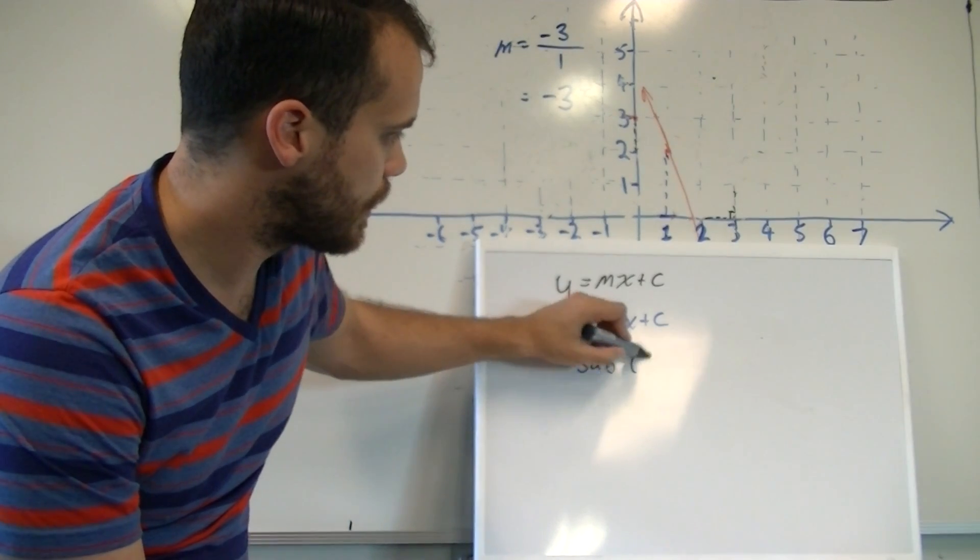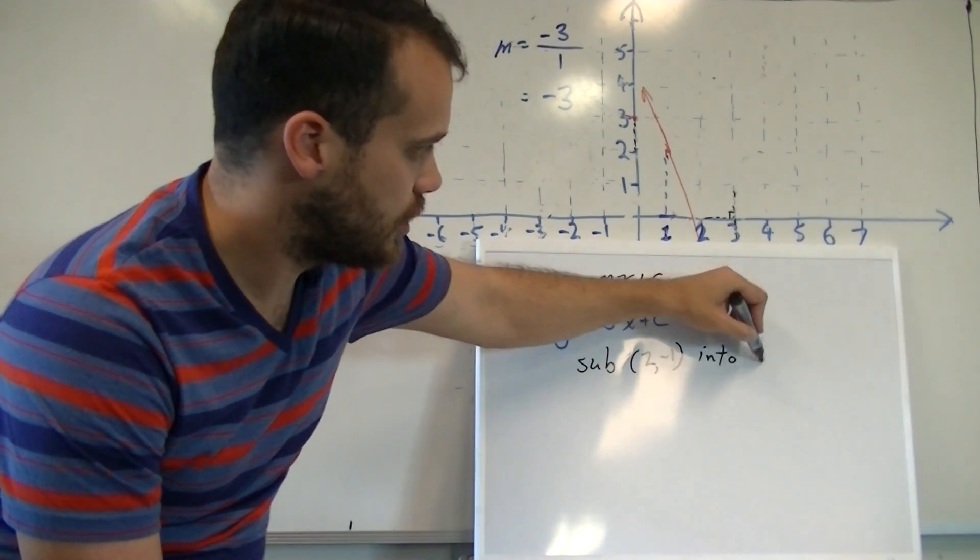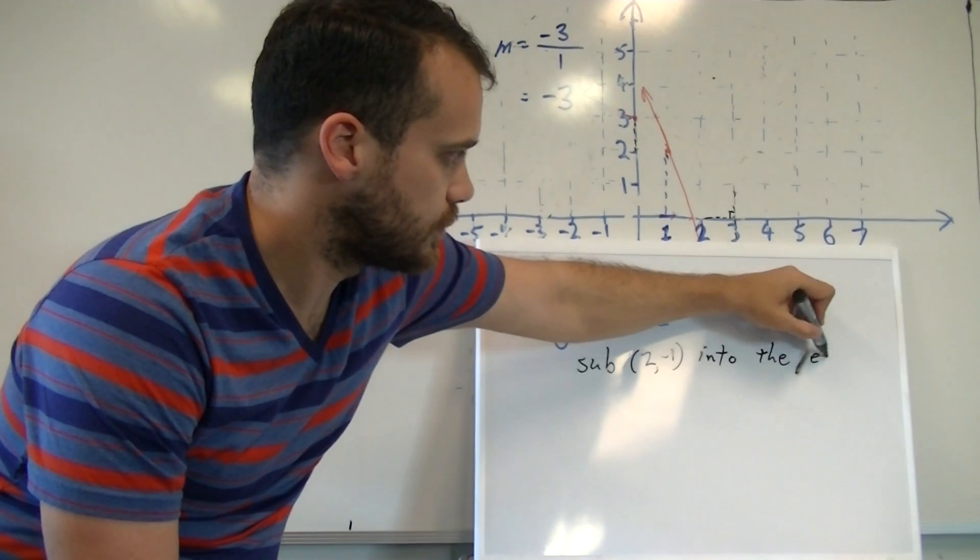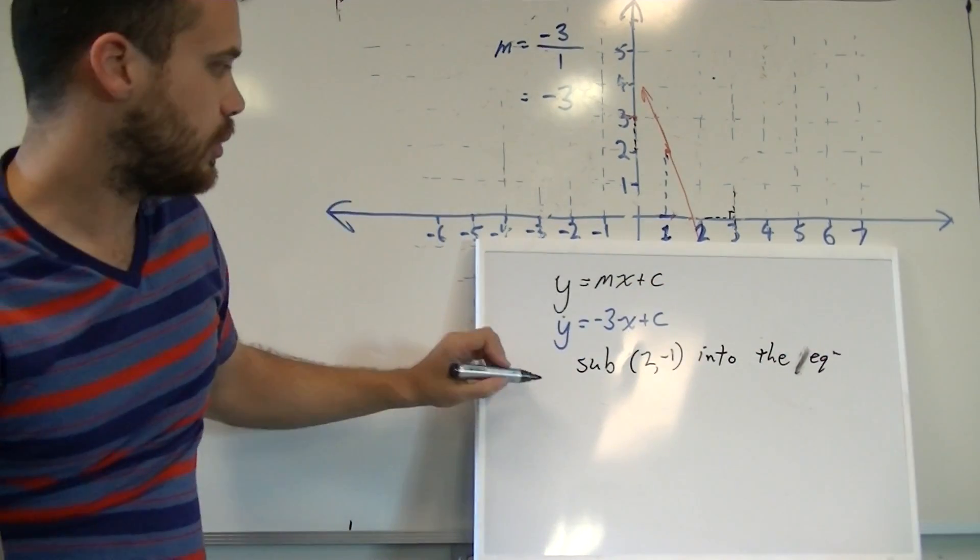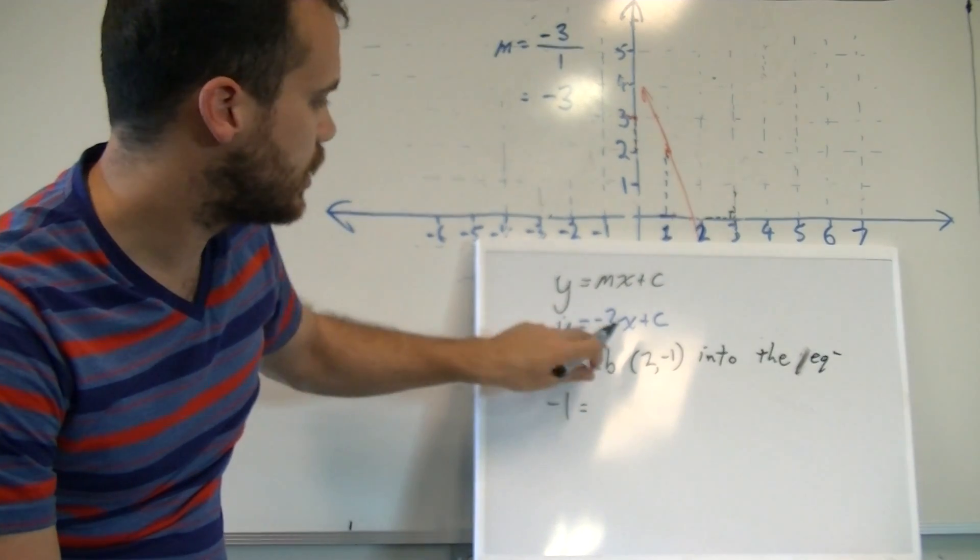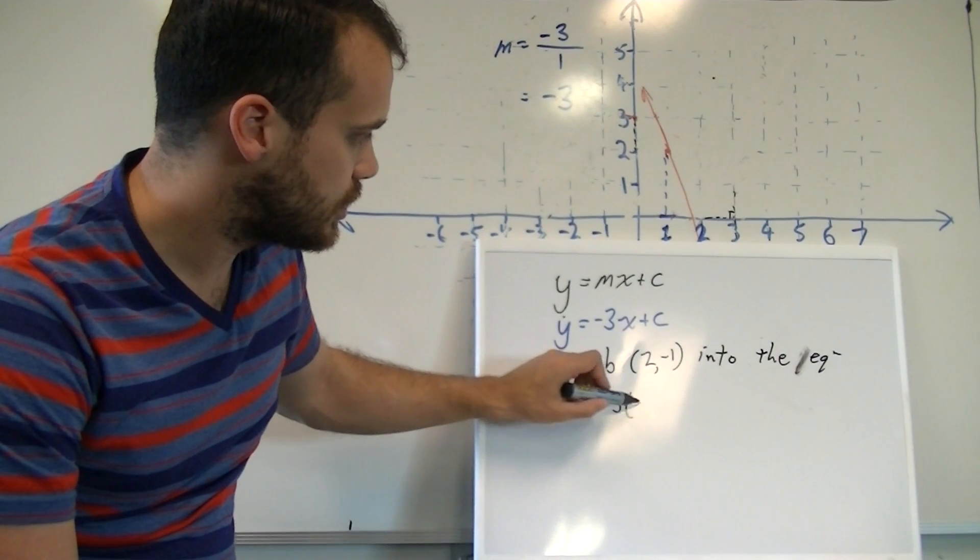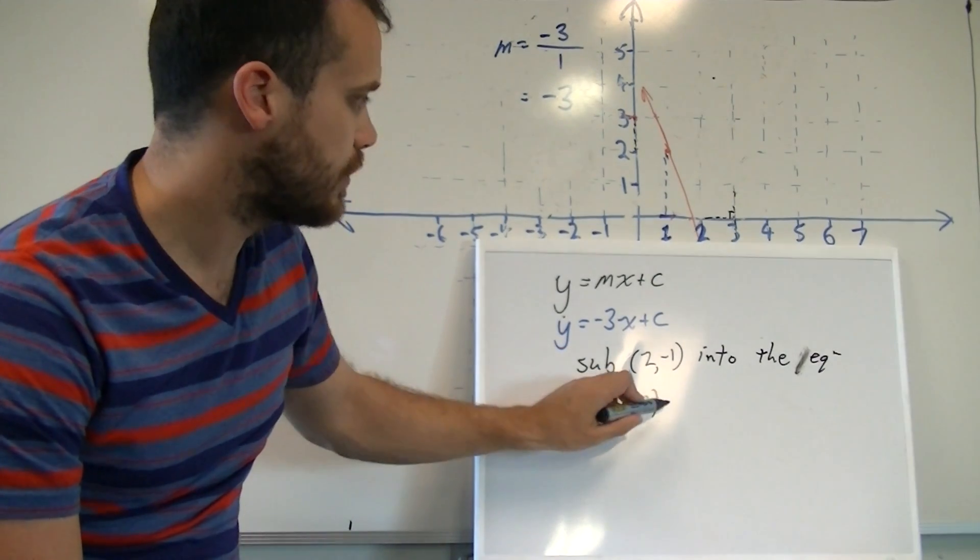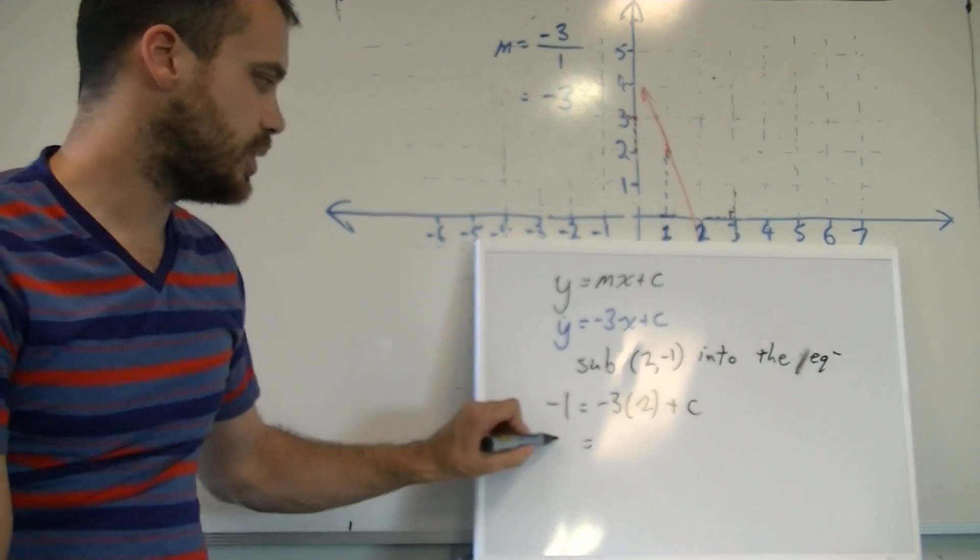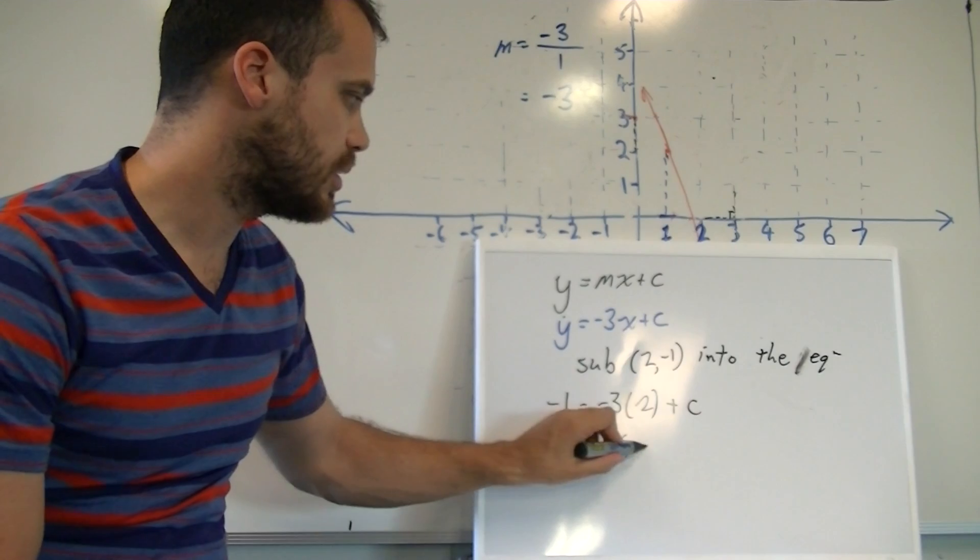Sub 2, negative 1 into the equation. What we're going to end up with is negative 1 equals negative 3, which is our gradient, x, which is 2, plus c. Negative 1 equals negative 3 times 2, which is negative 6, plus c.